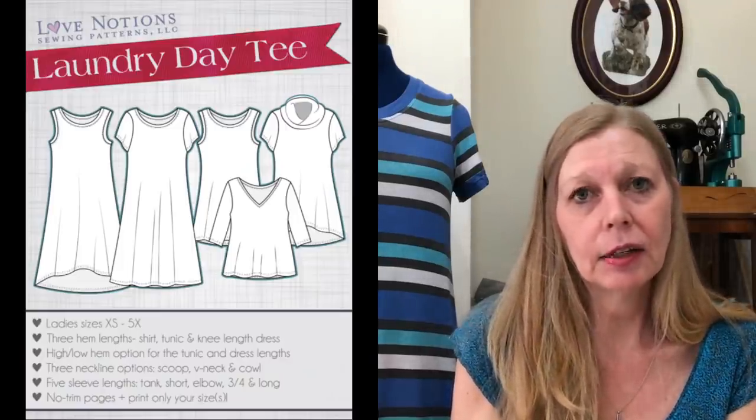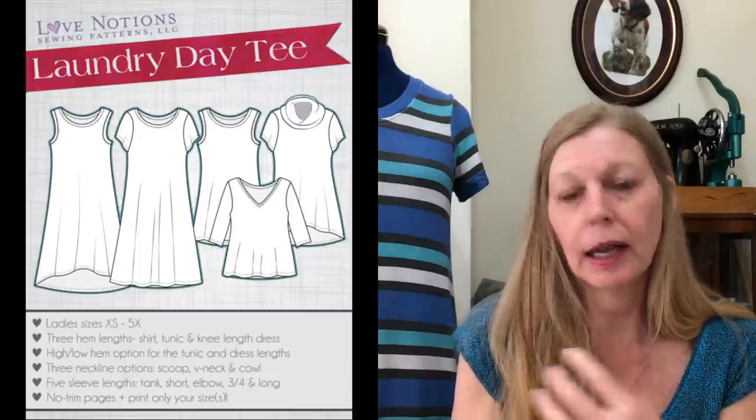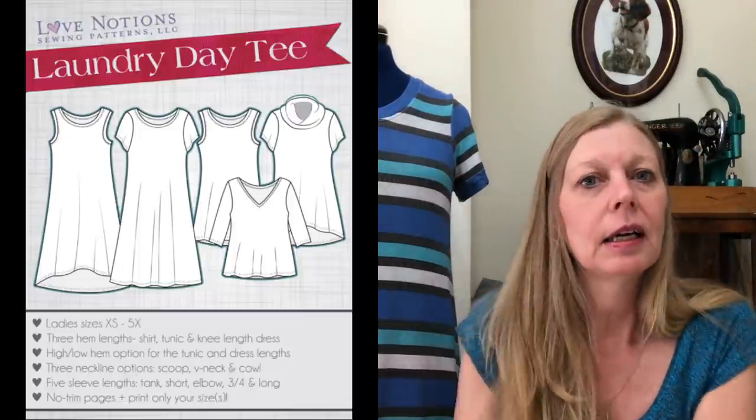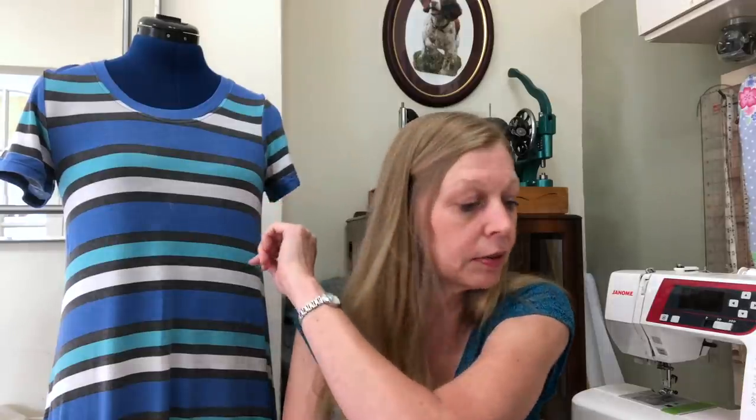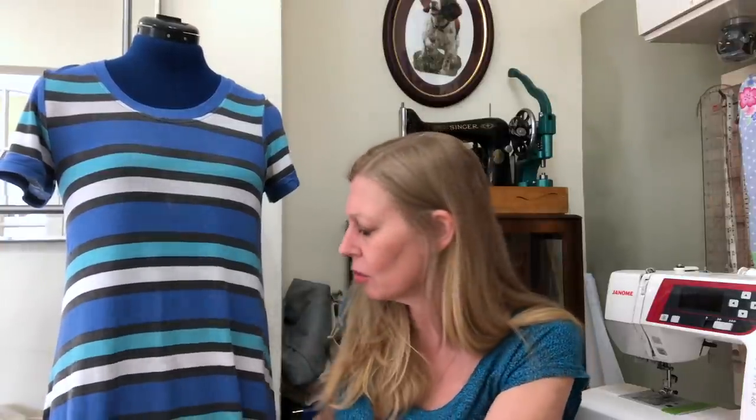There are lots of options with the Laundry Day T-shirt. It has three necklines: V-neck, cowl neck, and the scoop neck. It's got five sleeve options — sleeveless, normal t-shirt length, three-quarter length, long, and elbow length. Then you've got a tunic option, a normal t-shirt option finishing at the hip, and a dress length. The dress length is nice and swingy — fitted across the bust, then almost A-line, and you can do a high-low hem on both the tunic and the dress.